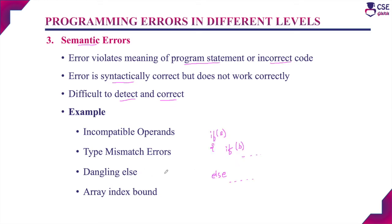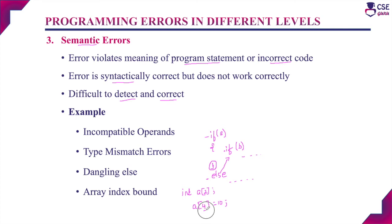Dangling else is another semantic error — if you miss a closing brace in a nested if statement, the else clause matches the wrong if statement, leading to dangling else. Array index out of bounds is also a semantic error: if an array is declared with size 3 (indices 0, 1, 2), trying to assign a value to the fifth memory location raises an array index bound error.